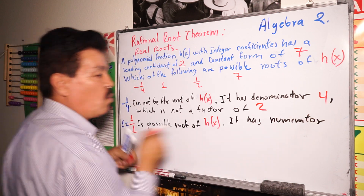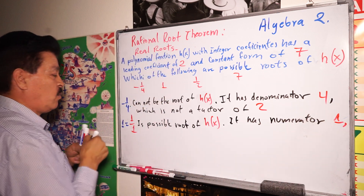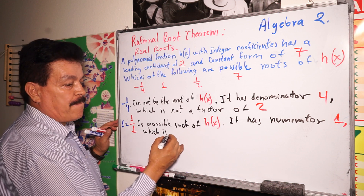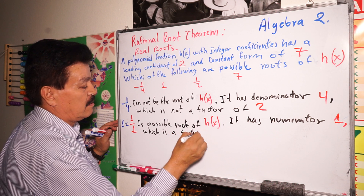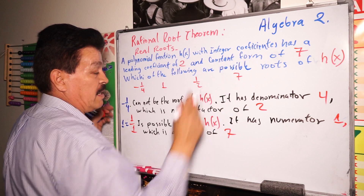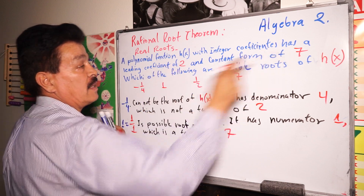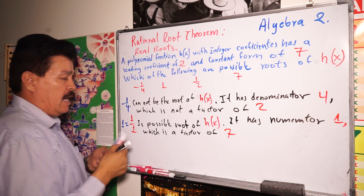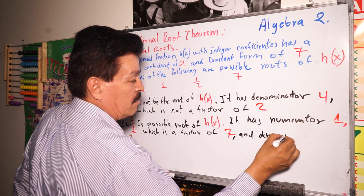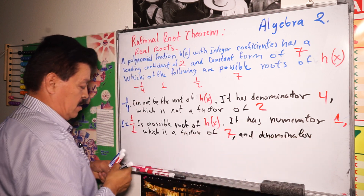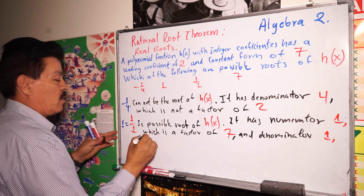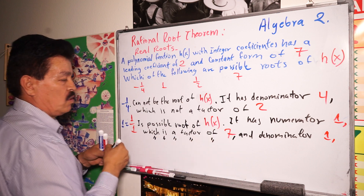The numerator is 1, which is a factor of the constant term 7. And the denominator is also 1, which is a factor of the leading coefficient 2. So 1 is a possible root of h(x).